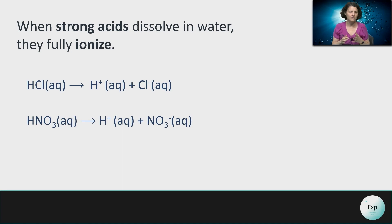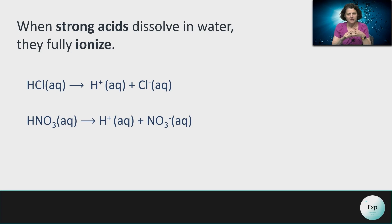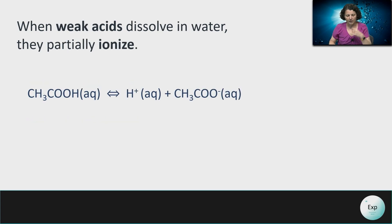In both dissociation and ionization, the result is the formation of ions in solution. The only difference is that for dissociation we're starting with ions in an ionic compound, and for ionization we're starting with a molecular compound. For molecular compounds, if we have a strong acid it will fully ionize in water, completely separating into hydrogen ions and anions.